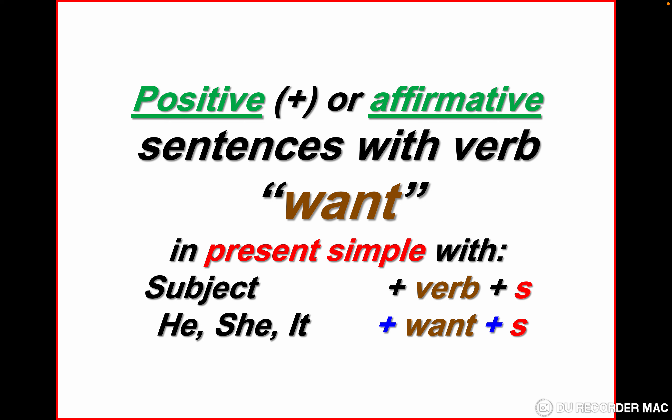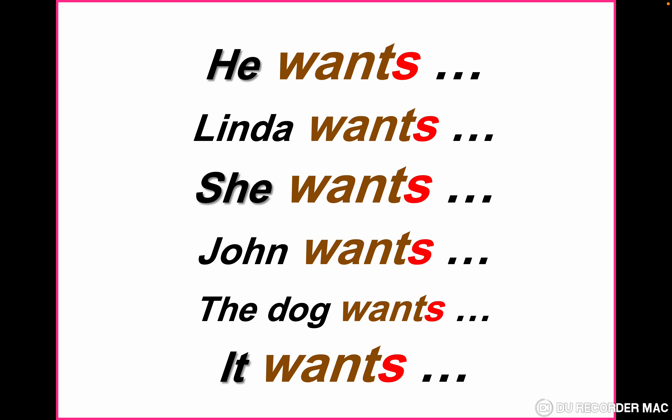Let's see the positive form of the verb 'want' in present simple. The rule is: subject plus verb plus 's'. The subject in this lesson is 'he' and 'she', so: he wants, she wants. With Linda, with John — the verb has 's' at the end: Linda wants, John wants, the dog wants, it wants.